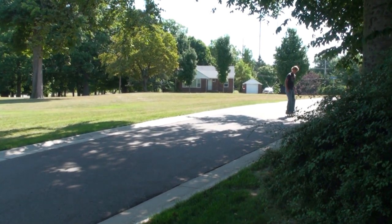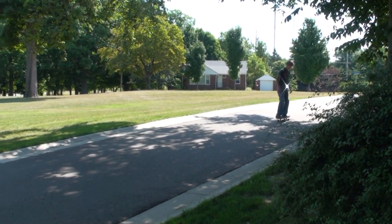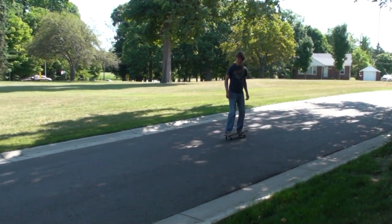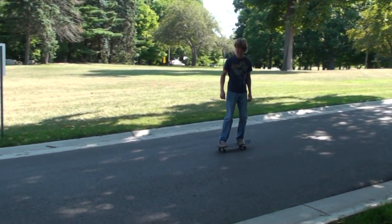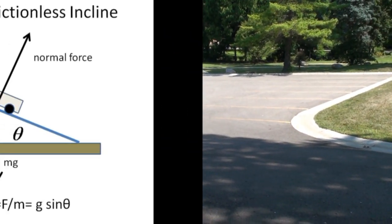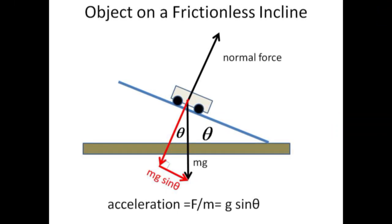An object on a frictionless inclined plane is assumed to undergo constant acceleration. In the absence of friction, there are two forces acting on the object. Gravity pulls straight down, and the normal force is exerted by the inclined plane perpendicular to its surface.